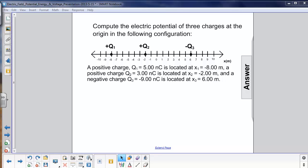Compute the electric potential of three charges at the origin in the following configuration. You can see we have a positive charge here, q1.